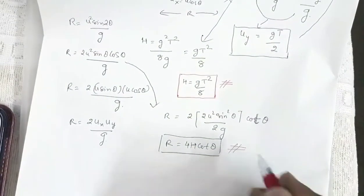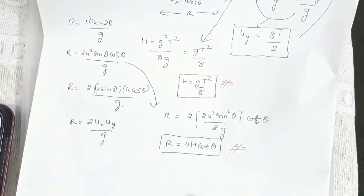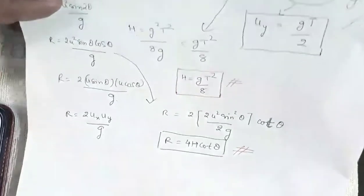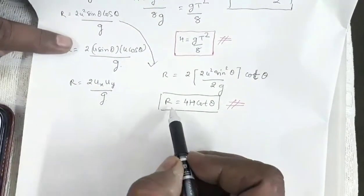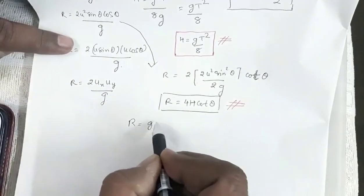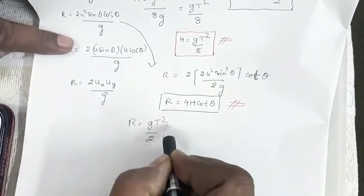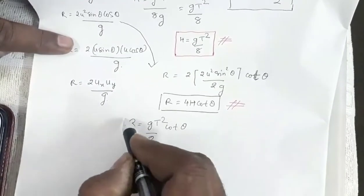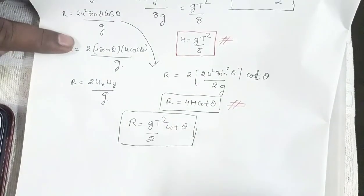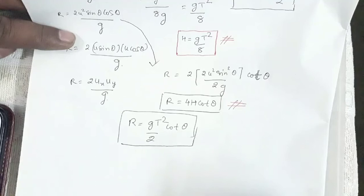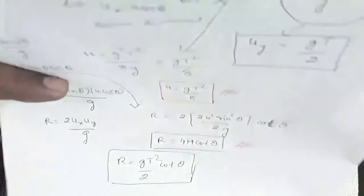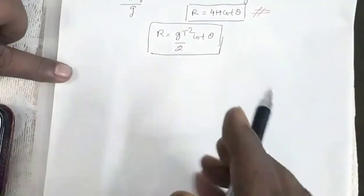The range can also be written in terms of time of flight: R = gT²/2 × cotθ. So this gives a relation between range and time of flight.